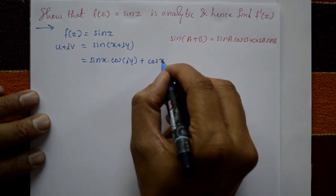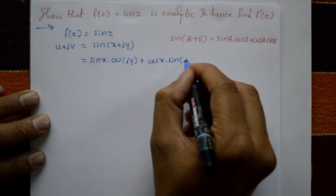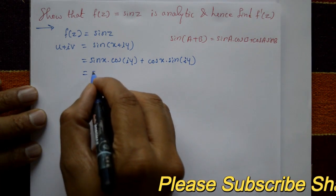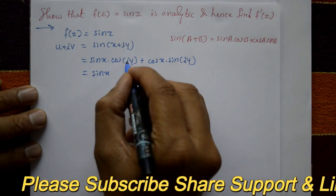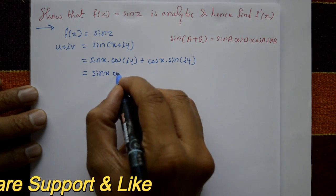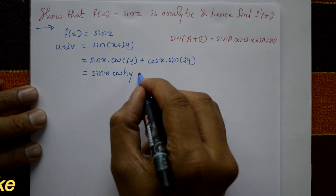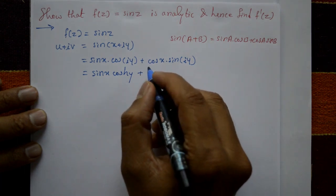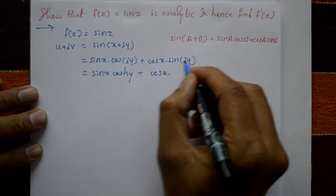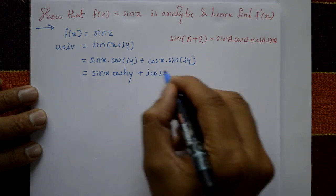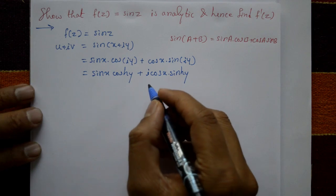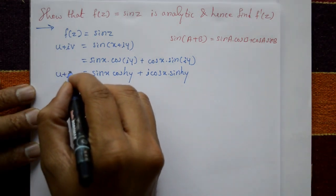This equals sin x into cos(iy), where cos(iy) equals cosh(y), plus cos x into sin(iy), where sin(iy) equals i·sinh(y). So the expression becomes sin x·cosh(y) plus i·cos x·sinh(y), which is in the form u plus iv.